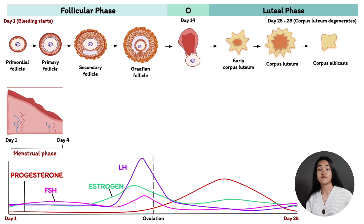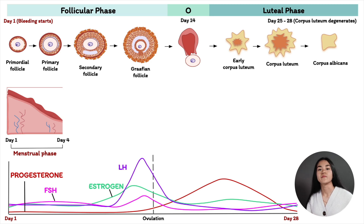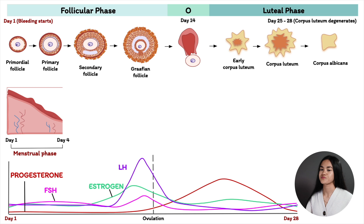Damaged capillaries and endometrial debris are the source of menstrual flow. The functional layer is the only layer that is lost — the basal layer, the other layer of the endometrium, remains unaffected, because it is supplied with short and straight arteries. That is the menstrual phase, day one to day five.